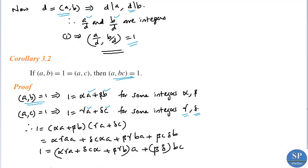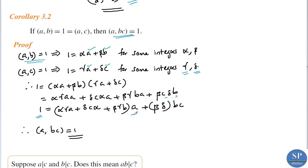Since both expressions equal 1, their product also equals 1: 1 equals (alpha·a plus beta·b)(gamma·a plus delta·c). Expanding: alpha·gamma·a² plus alpha·delta·ac plus beta·gamma·ab plus beta·delta·bc. Taking a outside from the first three terms, we get a times (alpha·gamma·a plus alpha·delta·c plus beta·gamma·b) plus bc times beta·delta. Thus 1 is expressed as a linear combination of a and bc, so GCD(a, bc) equals 1.